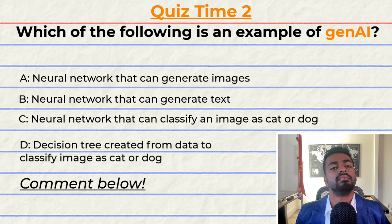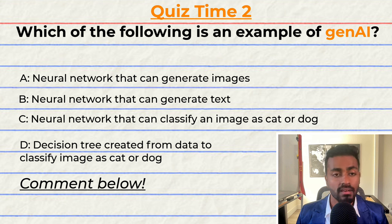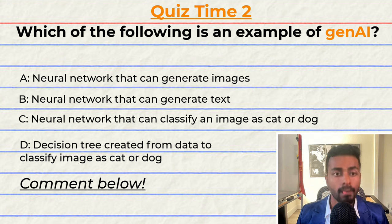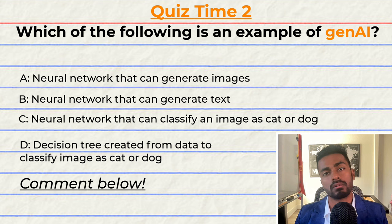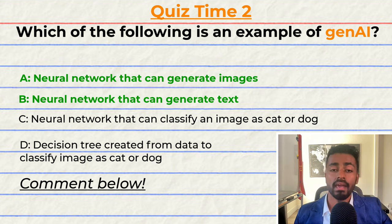Quiz time! It's that time of video again. Have you been paying attention? Which of the following is an example of Gen AI? A: a neural network that can generate images. B: a neural network that can generate text. C: a neural network that can classify an image as a cat or a dog. Or D: a decision tree created from data to classify an image as a cat or a dog. Note that multiple options may be correct. The correct options are A and B — but can you tell me why? Comment your reasoning down below and let's have a discussion. That's going to do it for quiz time and pass two, but keep paying attention because I'm still going to be back to quiz you.